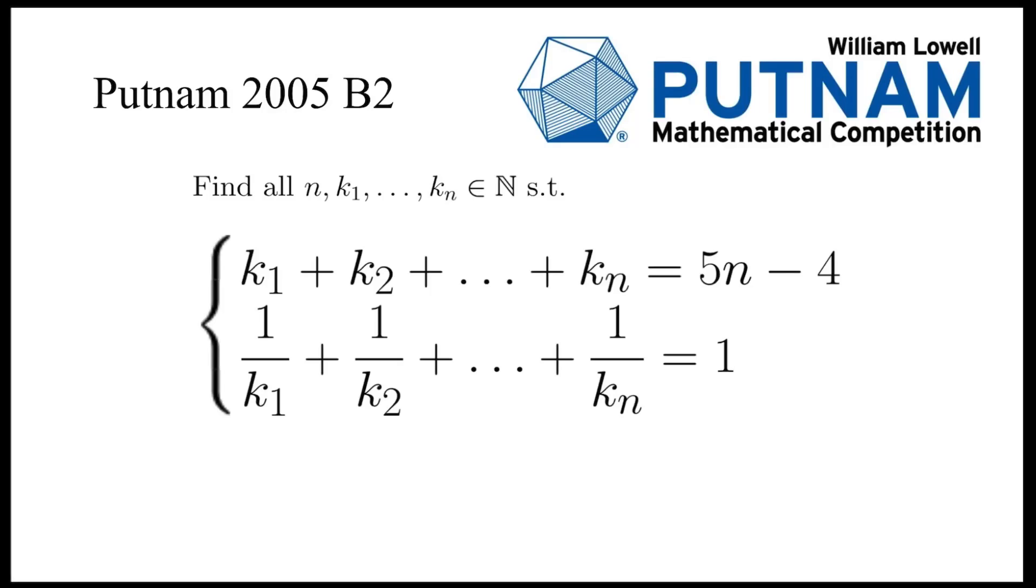In this video, we are going to solve a problem from Putnam 2005. Find n positive integers such that the sum equals 5n minus 4, while the sum of the reciprocals equals 1.